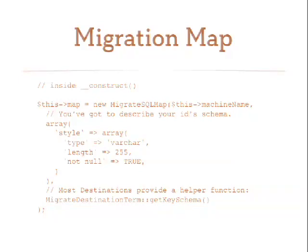Next is the migration map. It needs to know what the keys look like on the source and destination side. You do that using Drupal's hook_schema format, giving it an array of your fields on the source side. On the destination side there are typically helper functions — the destination class has a get_key_schema function so you don't have to type those in manually. One thing to note: the first parameter to the SQL map is the migration's machine name, which is basically the class name with 'Migrate' stripped off the end. You need to specify it so another migration can look up a key in it.